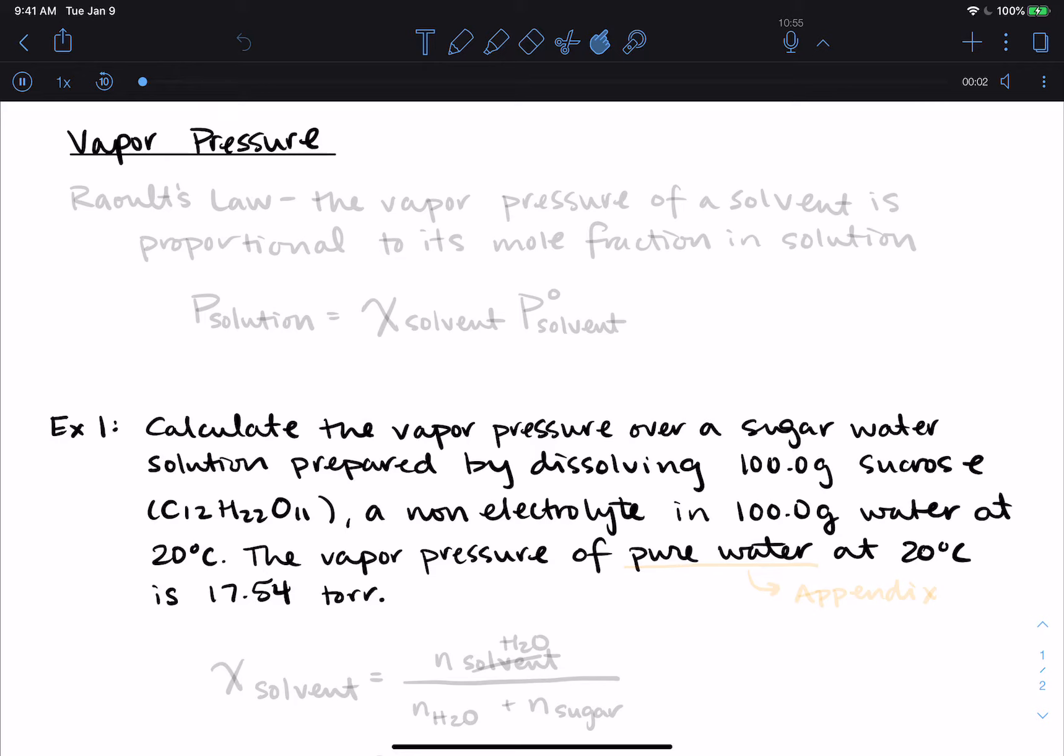The first colligative property that we're going to talk about is vapor pressure. And with vapor pressure, we use something called Raoult's Law to calculate the vapor pressure. So Raoult's Law says that the vapor pressure of a solvent is proportional to its mole fraction in solution.